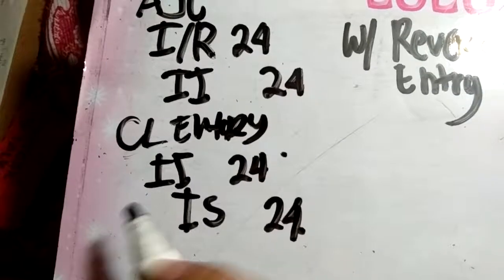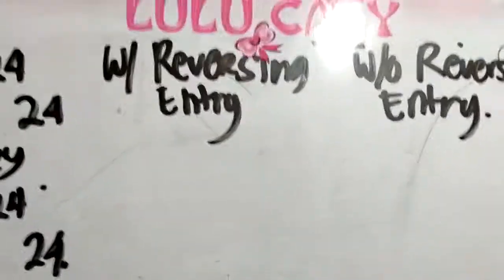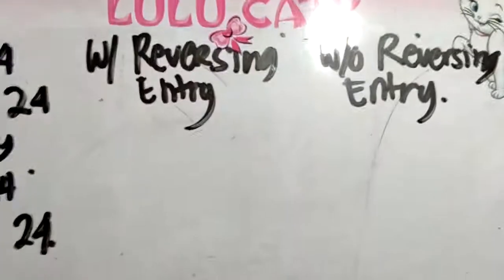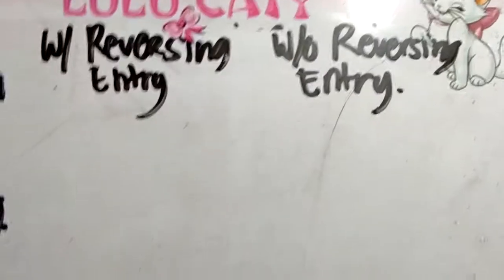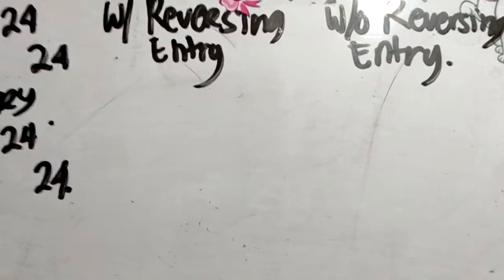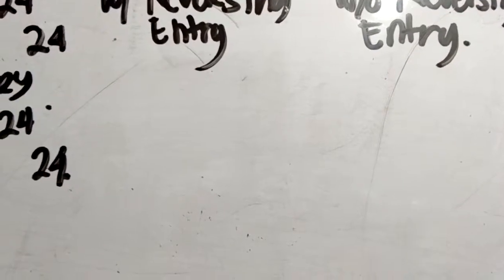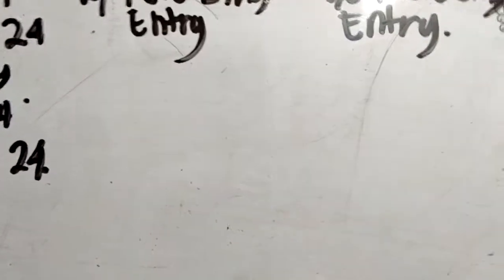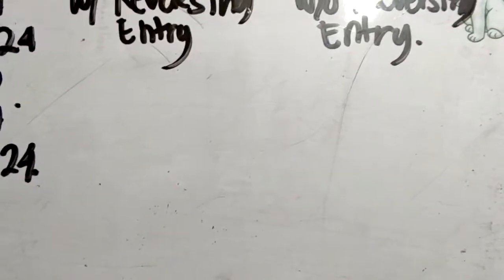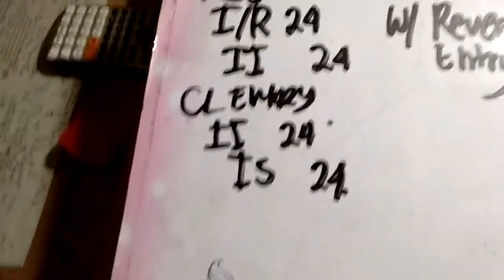So we're going to focus on with reversing entries and without reversing entries — what will the reversing entries look like for both? With or without reversing entries, the total income is the same, and the interest receivable is the same. But the question is: how much or what will you put in the journal entries? This was the first year, and this is the second year.